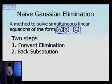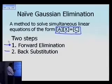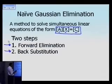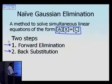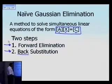For the naive Gaussian method, there are two steps: one is forward elimination, and the second one is followed by back substitution. In forward elimination, you take the equations and reduce them such that the coefficient matrix becomes upper triangular. In back substitution, you solve those equations starting from the last equation — that's why it's called back substitution.